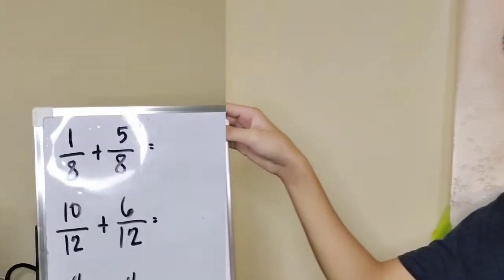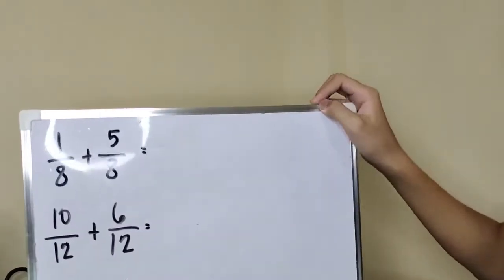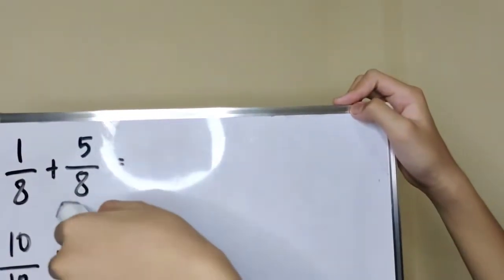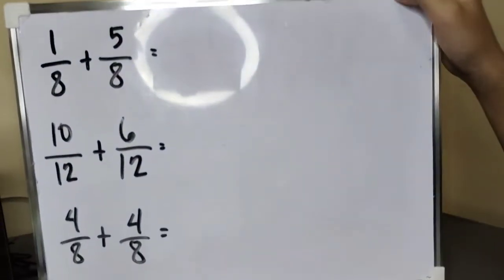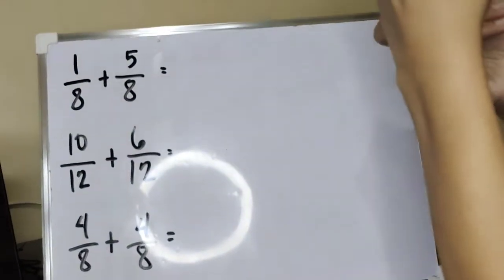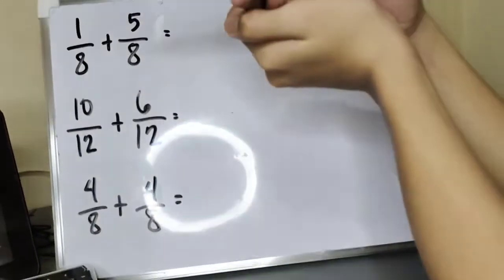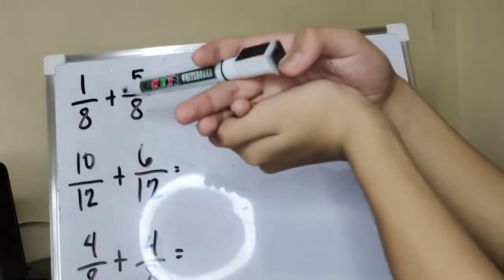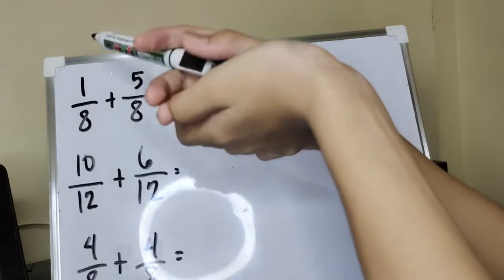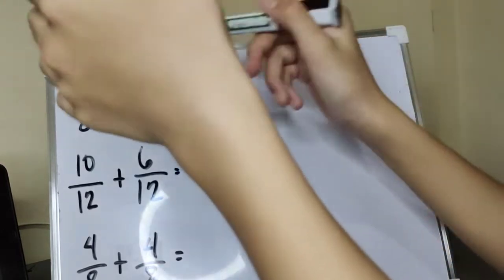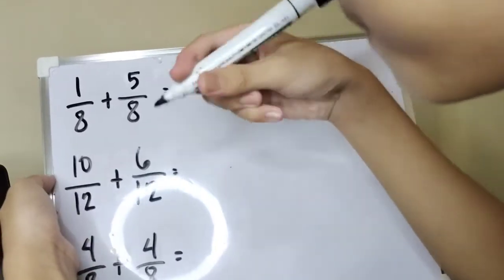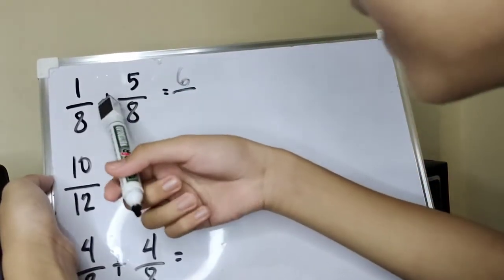Similar fractions. Ano ibig sabihin ng similar fraction, kuya? Parehas ang denominator. Ano ibig sabihin ng similar fraction ay pareho ang denominator. Kuya, paano isasolve yan? Kapag adding similar fraction, ipa-plus ang yung dalawang numerator. 1 plus 5 equals 6. Kapag sa denominator, kukupyahin lang.